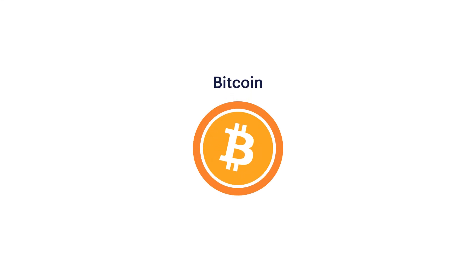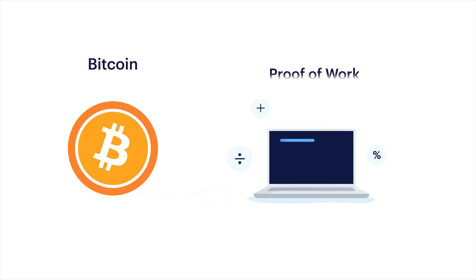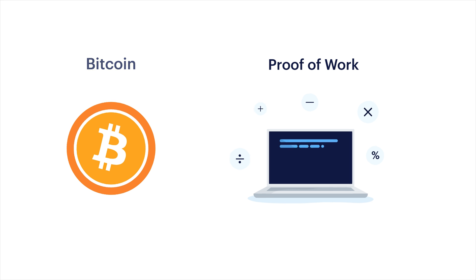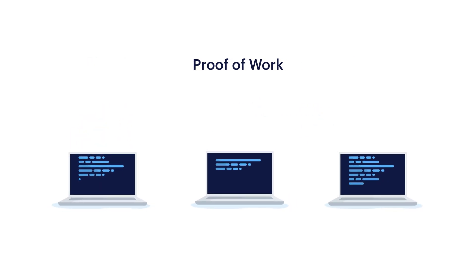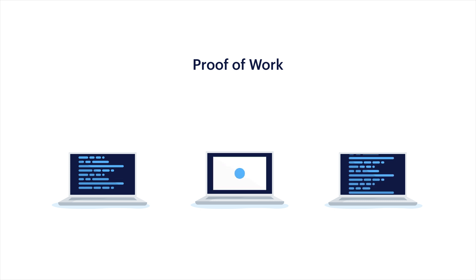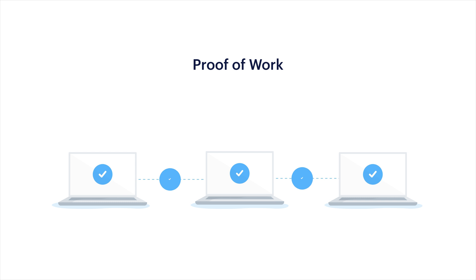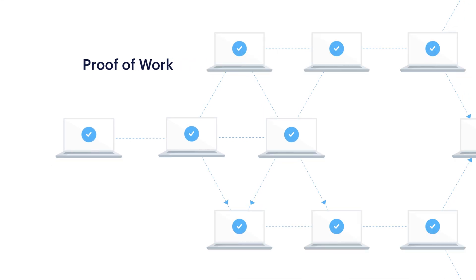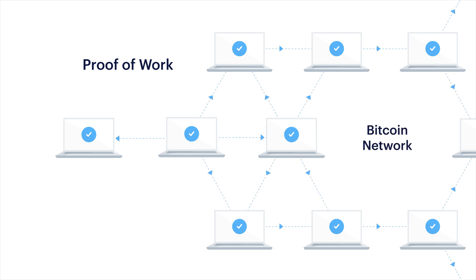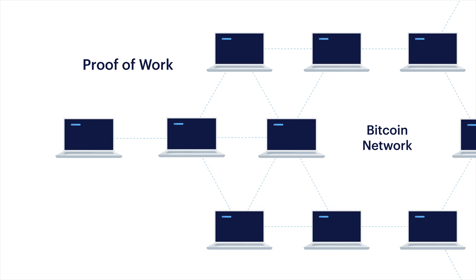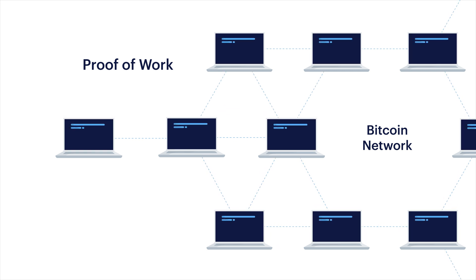Bitcoin, for example, uses a consensus model called proof-of-work. With proof-of-work, computers race to solve a mathematical problem, a process known as mining. The first computer to solve the problem shares the solution, which includes a list of validated transactions with all the other computers on the network. The transactions are then added to the Bitcoin blockchain. The network builds consensus, and every computer races to find the next proof-of-work.